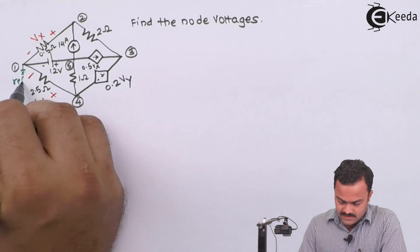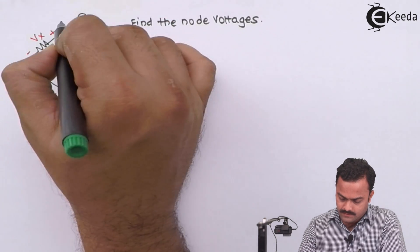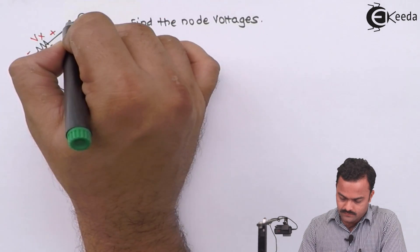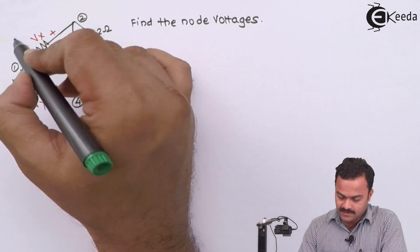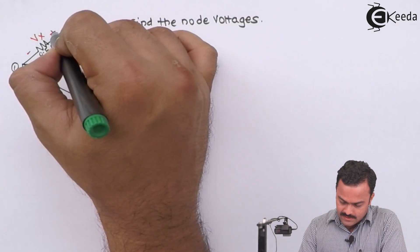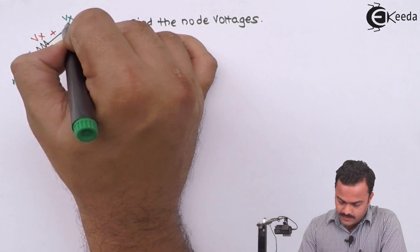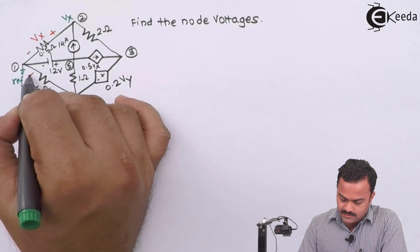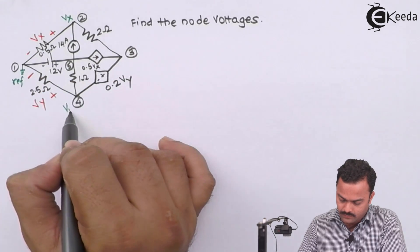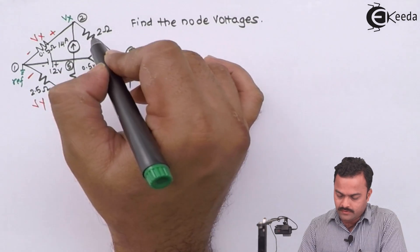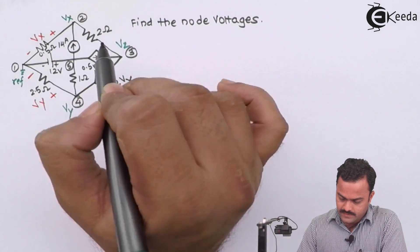Let's consider this as the reference. Then the potential of this node we will take as Vx. If this is the reference, this will automatically go to node number two and the potential of this node will become Vx. Similarly, this negative is connected to reference, so the potential of node number four will be Vy. Over here, just consider this as Vz.